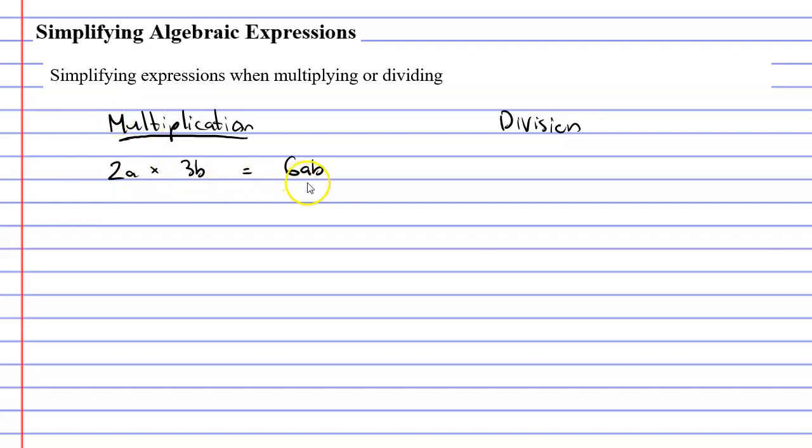So why does this method work? Well let's look at the original question 2a times 3b. Whenever a number is next to a pronumeral, this means multiplication. So we could actually write it as 2 times a times 3 times b. And you might remember way back in primary school, you learned that if you had an expression such as 2 times 3 times 4, you can multiply it in any order that you wish. The order in which you multiply these expressions doesn't matter, because either way you're going to get the same solution.